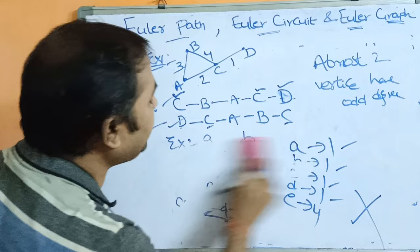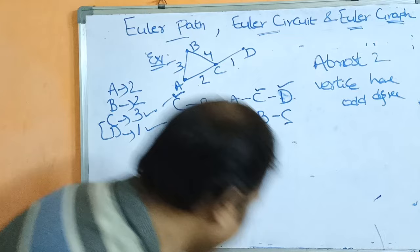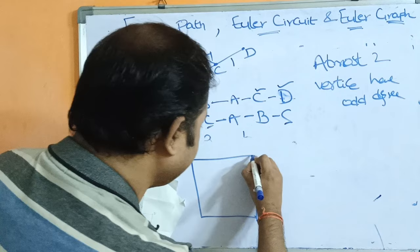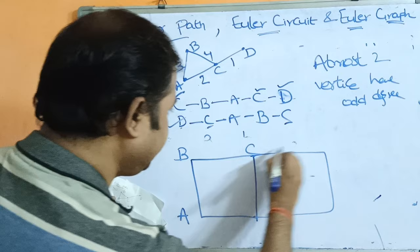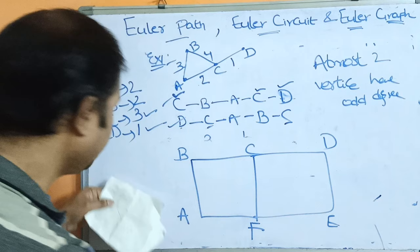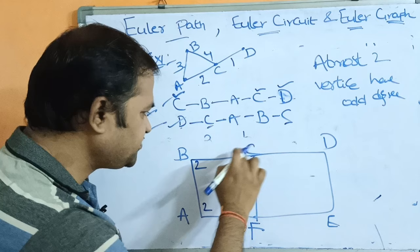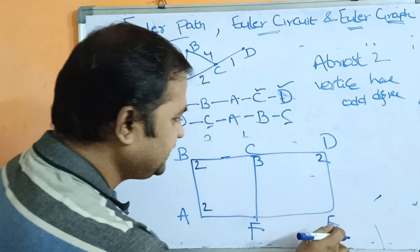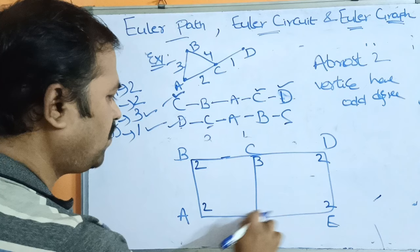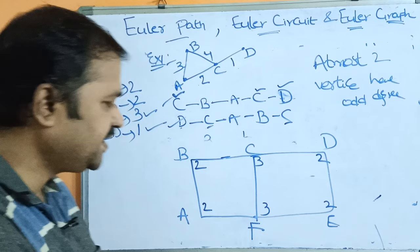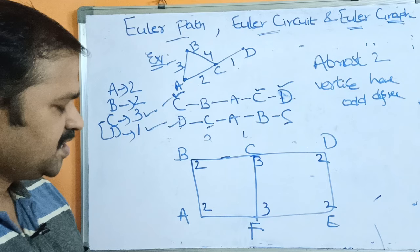Let us see one more example regarding Euler path. We have a graph with vertices A, B, C, D, E, and F. Let us check whether this graph has Euler path or not by calculating the degree of each vertex. Degree of A is 2, degree of B is 2, degree of C is 3, degree of D is 2, degree of E is 2, and degree of F is 3. Only two vertices — C and F — have odd degree, so this graph contains Euler path.